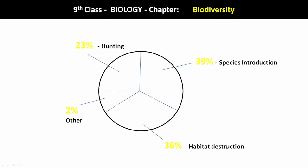A pie chart shows which factors are affecting our biodiversity, ecosystem, and biosphere by what percentage. Habitat destruction is 36 percent — deforestation is destroying our environment. When a species is introduced into an environment, 39 percent spoliation of biodiversity happens. Hunting accounts for 29 percent, and 2 percent are other factors.